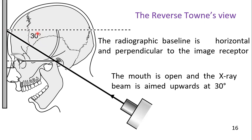The mouth is open and the x-ray beam is now passing through the condylar area and hitting the film at 30 degrees. Remember that the 30-degree angle is not measured directly from the film, but within a dotted imaginary line — so this is 30 degrees.